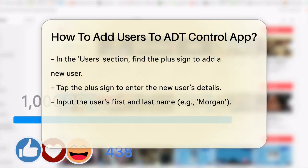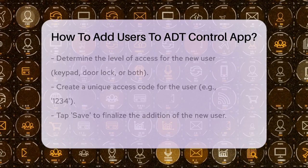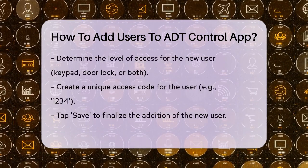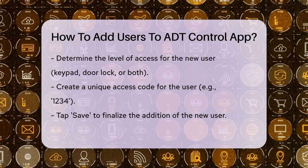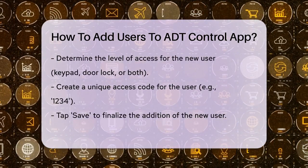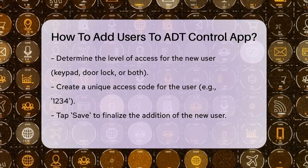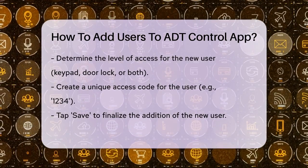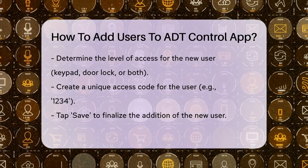After entering the name, you'll need to decide what level of access this user should have. You can choose if they should have access to just the keypad, the door lock, or both, depending on what features your system includes.